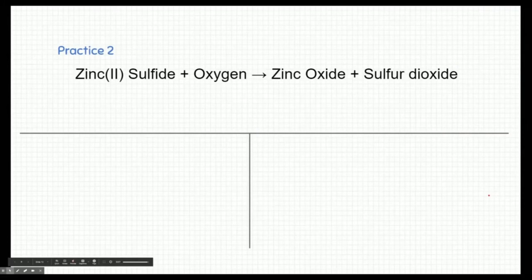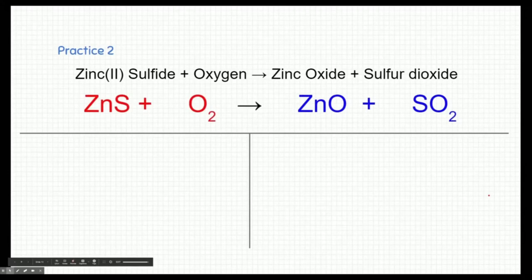All right, so here's a practice. Zinc 2 sulfide plus oxygen gives you zinc oxide and sulfur dioxide. That's a chemical reaction equation. Now, we're going to need to write the different compounds based on all the different hints we saw before. And I'm going to go ahead and show you what that looks like. Again, if you're struggling writing ionic or covalent compounds, you should really go back and review those.